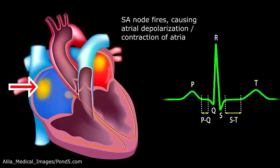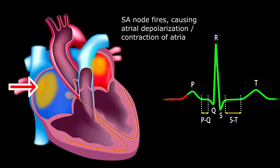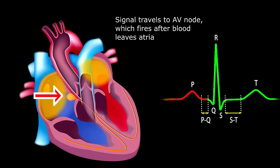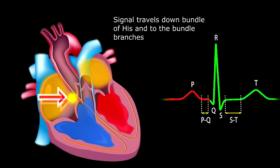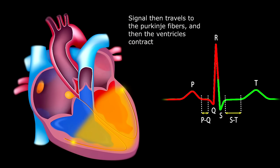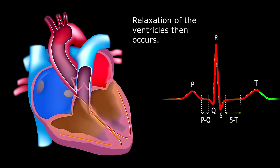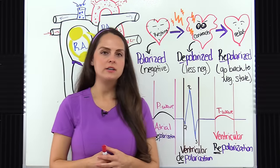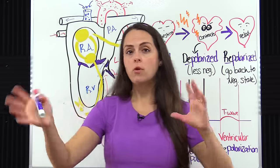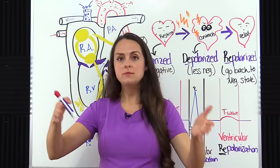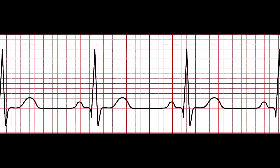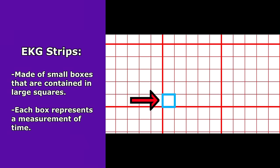First, the SA node fires, and this causes atrial depolarization, which causes the atria to contract. Then the signal goes down to the AV node - notice the AV node does not fire until those atria are empty and the blood is in the ventricles. Then it's time for ventricular depolarization. The signal travels down through the bundle of His to the bundle branches and then the Purkinje fibers, causing ventricular contraction followed by relaxation. Now let's look at this PQRST complex in detail and apply it to EKG strip paper.